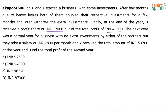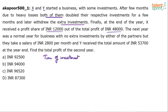Now understand: throughout the whole two-year process, there has never been a point where X or Y withdrew from the business entirely. They started together, both doubled their investments, and both withdrew the extra together. So there was never a point where one of them was not part of the business — they were there throughout the entire period. This means the time or duration of investment is not a factor in this question.